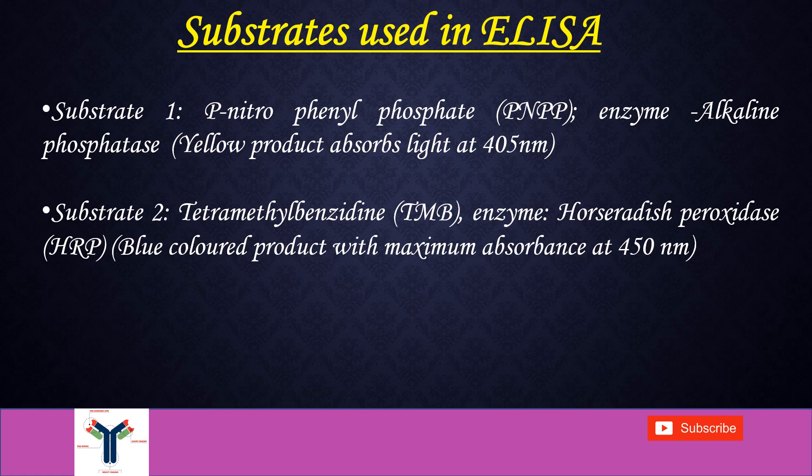Generally in ELISA we use two types of substrates. First one is PNPP, that is P-nitrophenyl phosphate, when we are using the enzyme alkaline phosphatase. When we use PNPP tablets it gives a yellow coloured product which absorbs maximum light at 405 nanometers, so we take the reading at optical density 405 nanometers. The second substrate gives a blue colour reaction.